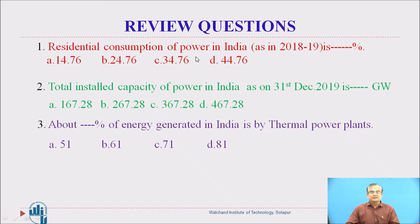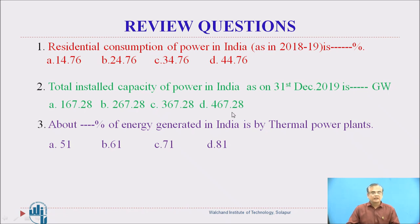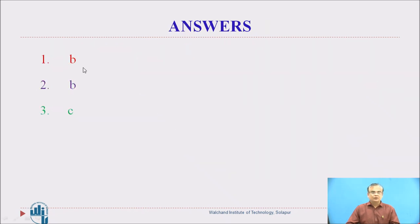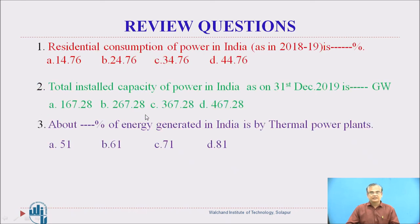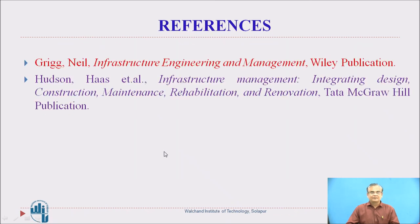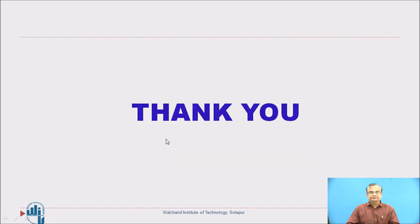Here are three review questions. First: residential consumption of power in India as of 2018-19 — answer is B, 24.76%. Second: total installed capacity of power in India as on 31st December 2019 — answer is B, 367.28 gigawatts. Third: approximately what percentage of energy generated in India is from thermal power plants — answer is C, 71%. These are the references for today's session. Thank you.